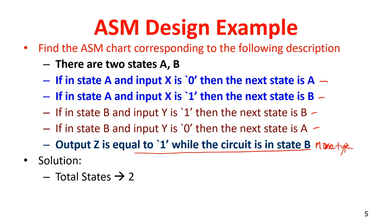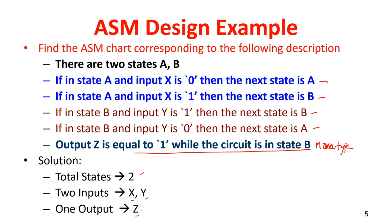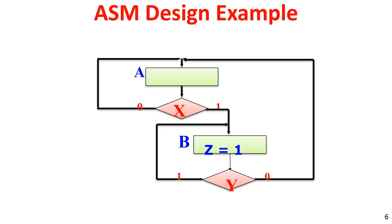The solution: total number of states is 2 — states A and B — with two inputs x and y and one output z. If you are in state A, transitions depend only on input x, not on y. If x is 1 it goes to state B; if x is 0 it retains the same state.